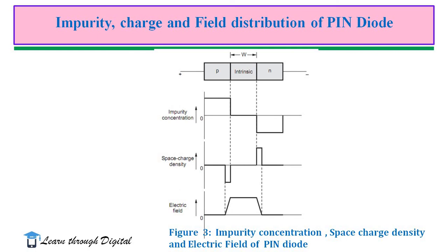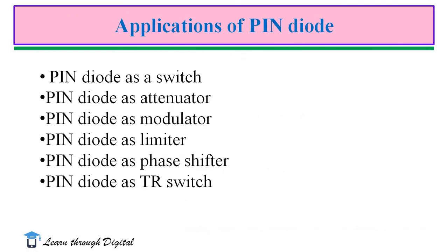RF AC signals can pass through the PIN device, and under some circumstances it is merely a parallel plate capacitor. We can use a PIN diode as an electronic switch for RF signals, as an RF delay line, phase shifter, or as an amplitude modulator. These are the applications of PIN diode. A PIN diode can be used either as a variable resistor or an electronic switch for RF signals.